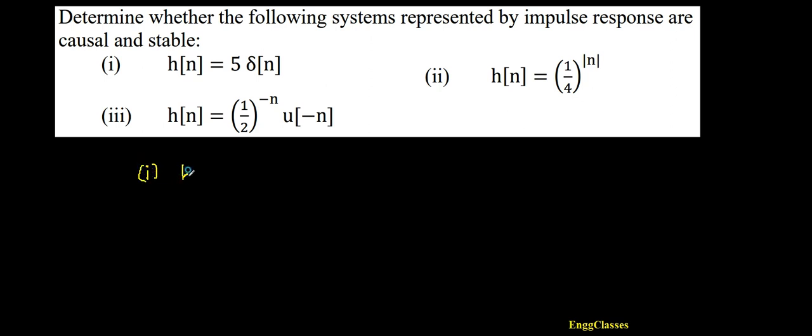H of n is equal to 5 times del of n. Is this system causal and stable? So let me check this first for causality. Is this system causal or not?